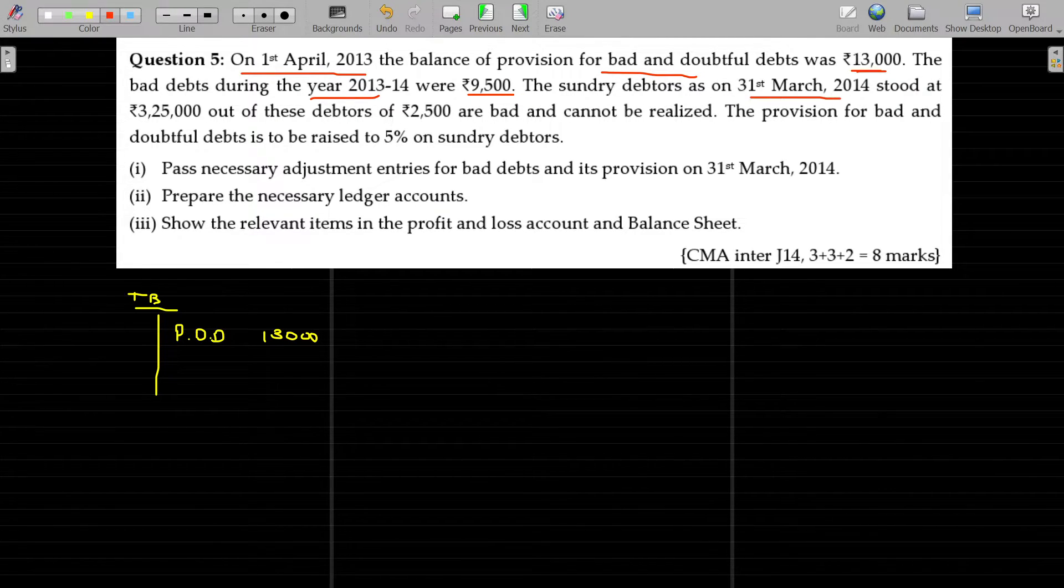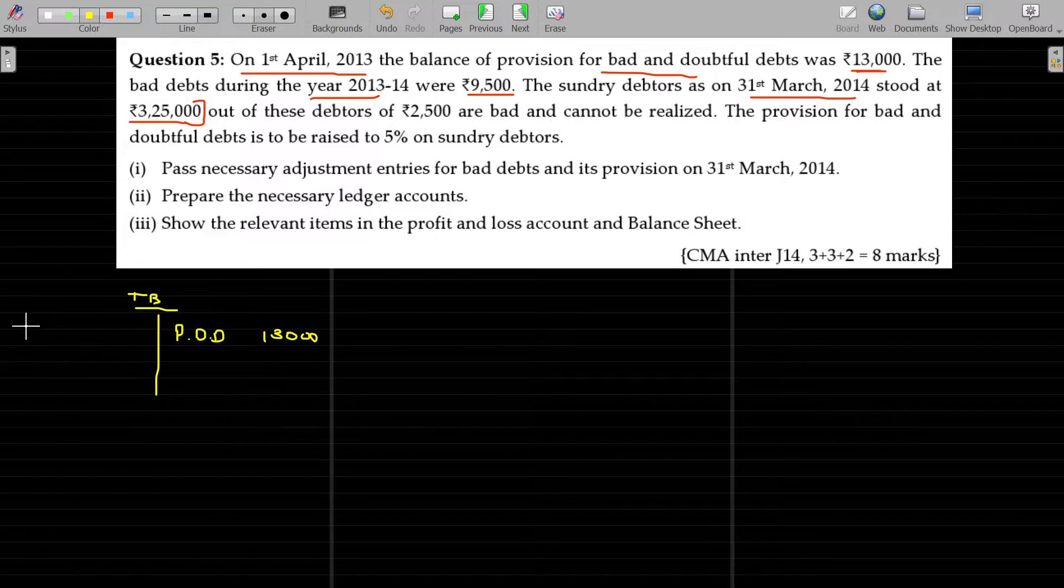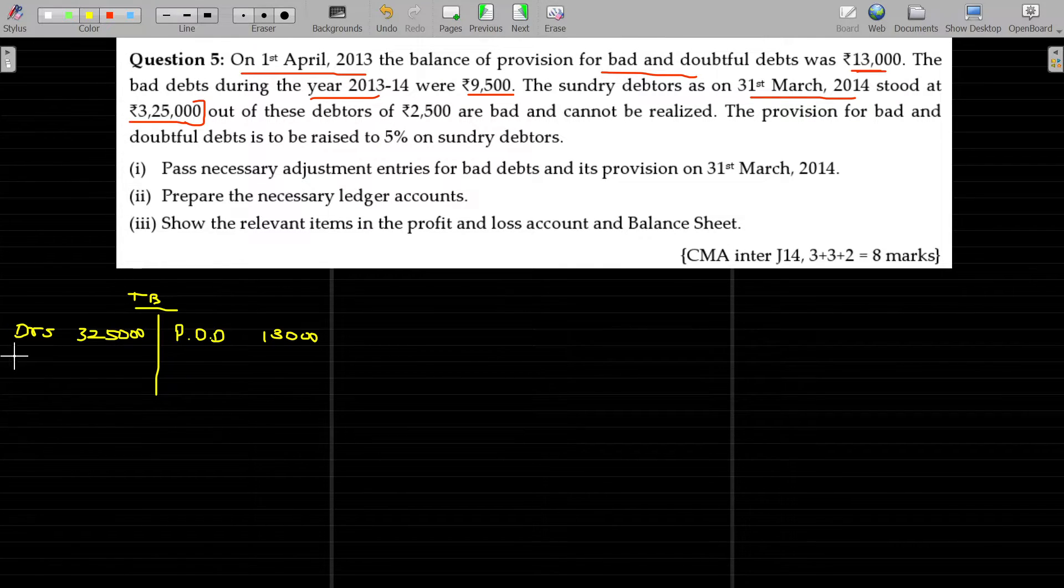Sundry debtors as on 31st March 2014 stood at 3,25,000. So debtors in the debit side of the trial balance will show 3,25,000. And bad debt in the debit side of the trial balance will be 9,500.